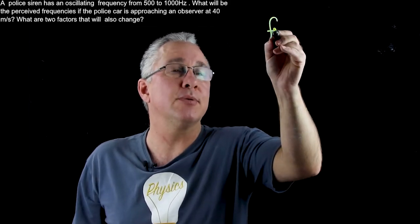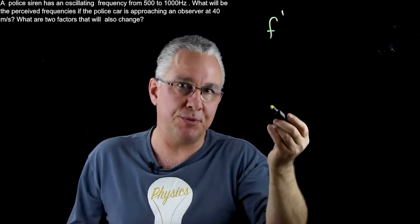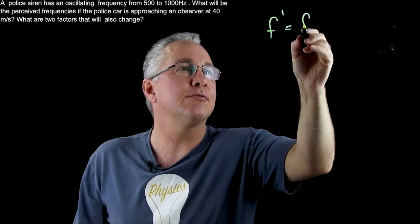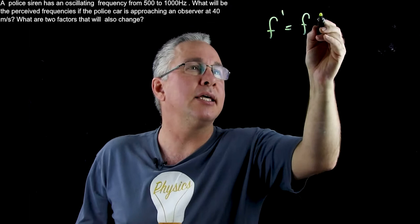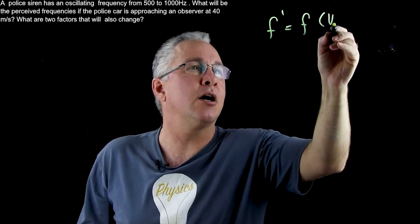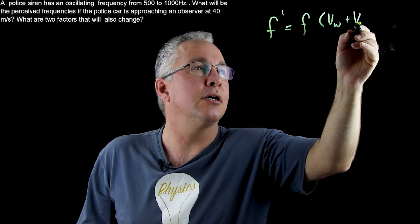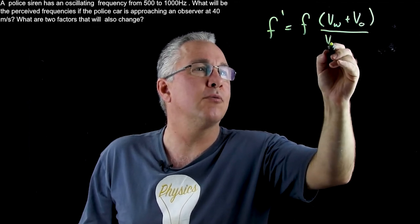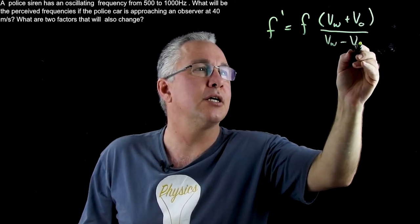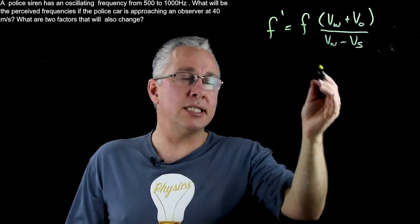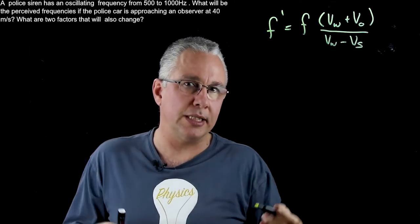And so what we have is our frequency of our perception, what we observe, is equal to the frequency that is emitted and this is multiplied by the velocity of the wave plus the velocity of the observer over the velocity of the wave minus the velocity of the source. Now this is a case where it is approaching.